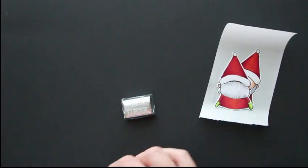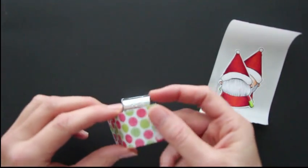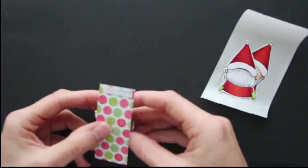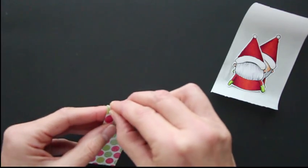First you will need a nugget and a piece of paper. Mine measures one and a quarter by three. And then I just added adhesive.